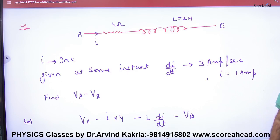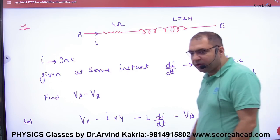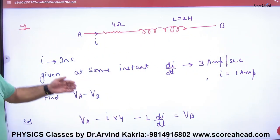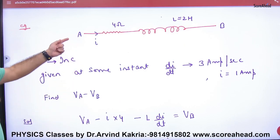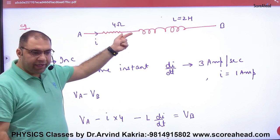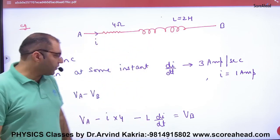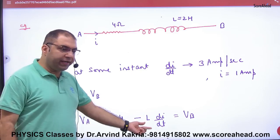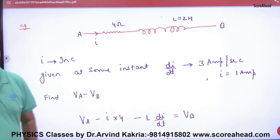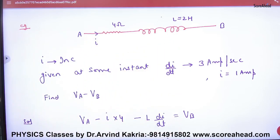In the direction of current, Va minus I×4 and inductor induced emf minus L(di/dt) is equal to Vb. What point is clear here?